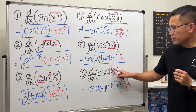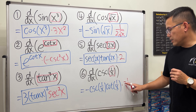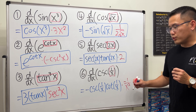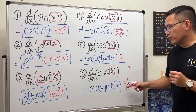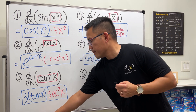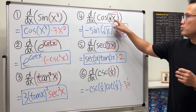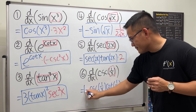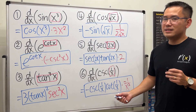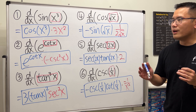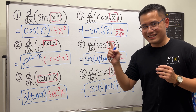I usually suggest students remember that the derivative of 1/x is negative 1 over x squared, so you don't have to apply the power rule every time. Let me know if this video helps, and if you need more practice with derivatives, check out my other videos in my playlist.